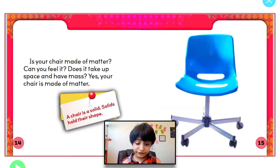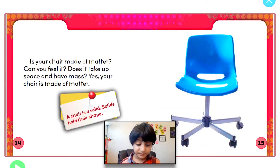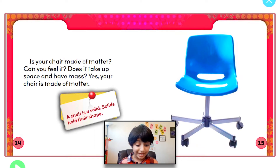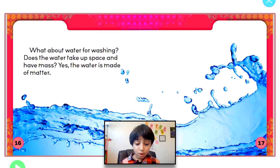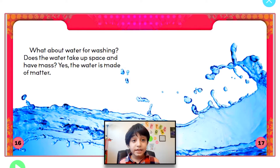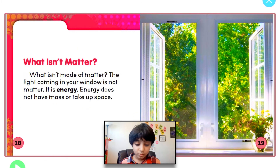Is the chair made of matter? Can you feel it? Does it take up space and have mass? Of course it does — your chair is made of matter. A chair is a solid; solids hold their own shape. What about water for washing? Does the water take up space and have mass? Yes, the water is made of matter. It does not have its own shape.